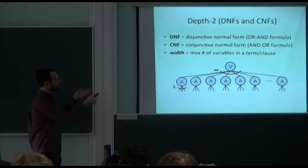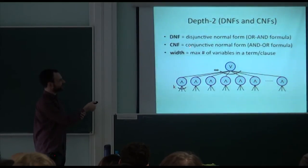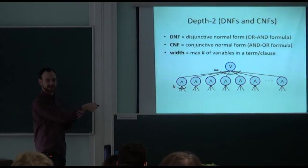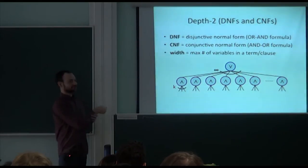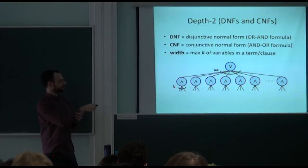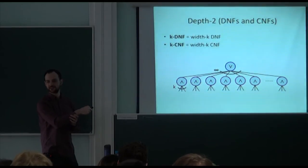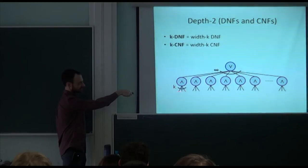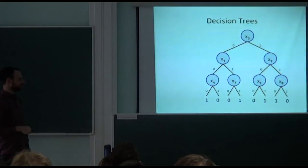A special case is the depth-2 case, also known as DNFs and CNFs — disjunctive normal form and conjunctive normal form. A DNF is an OR of ANDs. The width of a DNF or CNF is the maximum number of variables in a term or clause, and we write k-DNF for width-k DNF. A k-DNF has an OR gate with unbounded fan-in receiving ANDs of at most k literals.